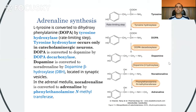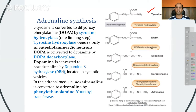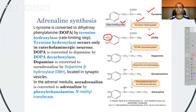Coming to adrenalin synthesis, the first step is the conversion of L-tyrosine into DOPA. DOPA stands for dihydroxyphenylalanine. The enzyme tyrosine hydroxylase plays a major role here. This conversion of tyrosine into DOPA is the slowest step encountered in adrenalin synthesis, and therefore it is called the rate-limiting step. In this conversion, a hydroxyl group is added by the tyrosine hydroxylase enzyme.